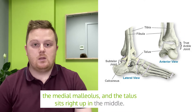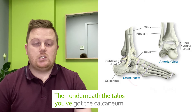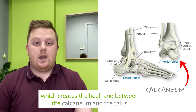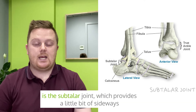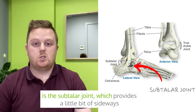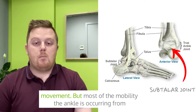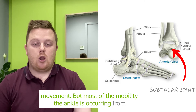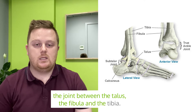The talus sits right up in the middle. Then underneath the talus you've got the calcaneum, which creates the heel, and between the calcaneum and the talus is the subtalar joint, which provides a little bit of sideways movement. But most of the mobility of the ankle is occurring from the joint between the talus, the fibula, and the tibia.